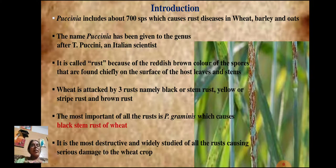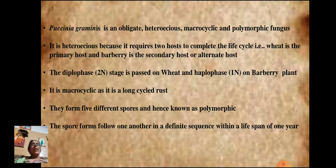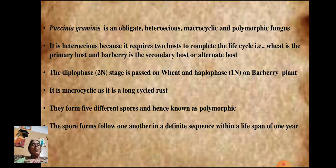Puccinia graminis is an obligate, heteroecious, macrocyclic, polymorphic fungus. As an obligate parasite, it must complete its life cycle only in a living host. It is heteroecious because it requires two different hosts — the wheat plant and the barberry plant — to complete its life cycle. The primary host is wheat, where the diploid phase of the fungus is passed.